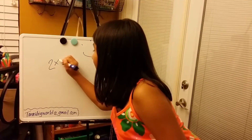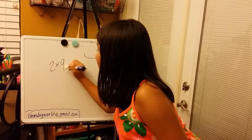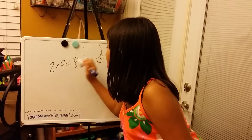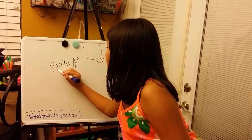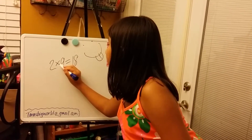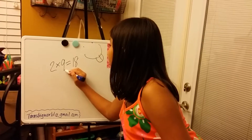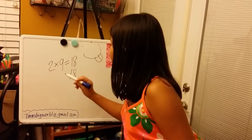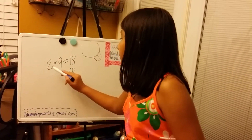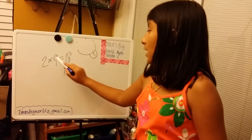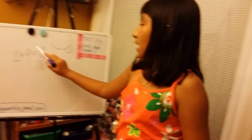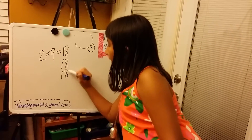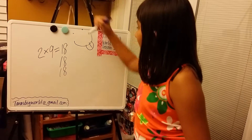Two times nine equals eighteen. Two times nine equals eighteen. Two times nine equals eighteen. Yay!